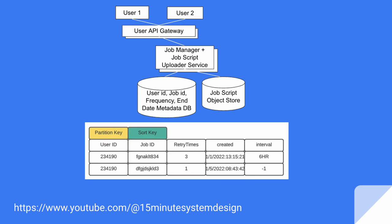We need to understand how this database needs to be partitioned at large scale. We are keeping user ID as a partition key. To sort jobs, we use job ID as a sort key, and the job ID format can be user ID underscore epoch time. We can also store the number of retries in case jobs fail, and the interval or frequency of how often we want to run the job.